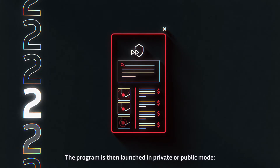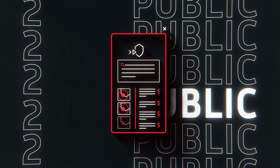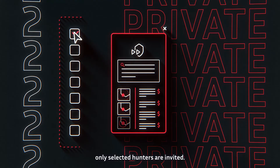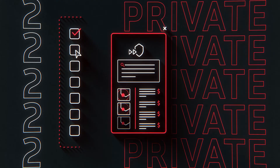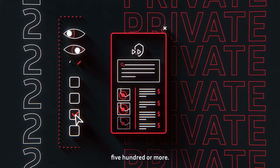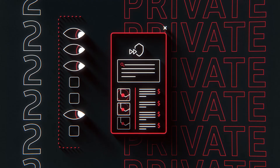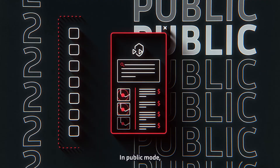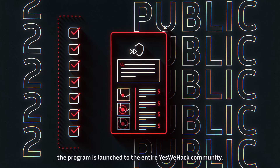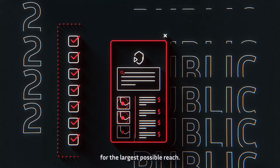The programme is then launched in private or public mode. In private mode, only selected hunters are invited — it could be 5, 50, 500 or more. You control the pace. In public mode, the programme is launched to the entire YesWeHack community, for the largest possible reach.